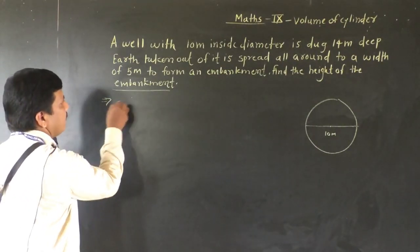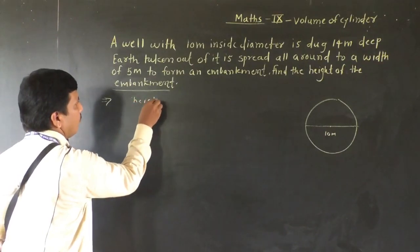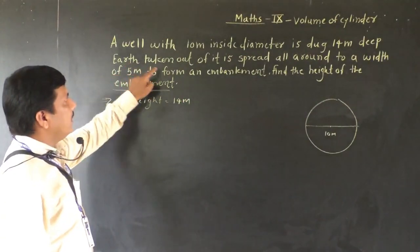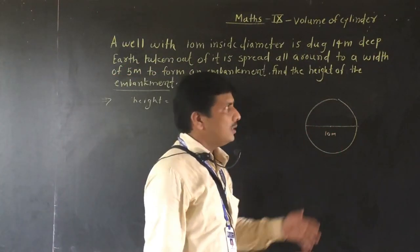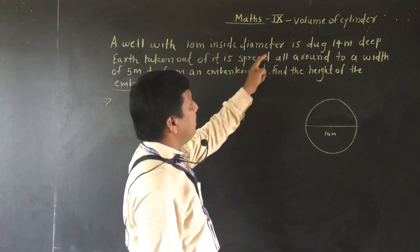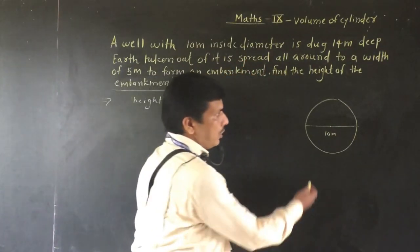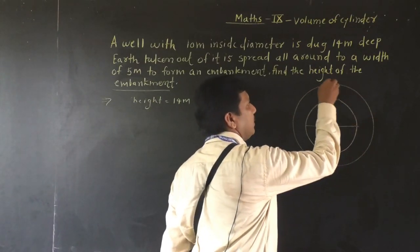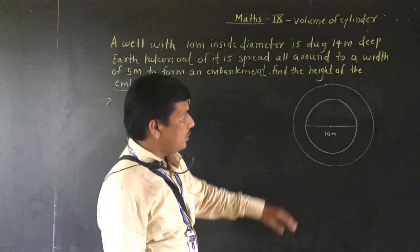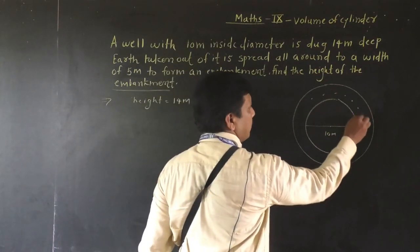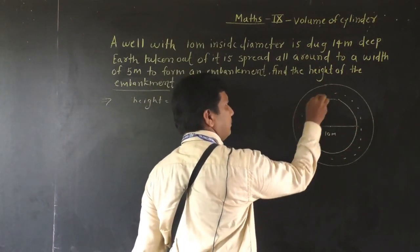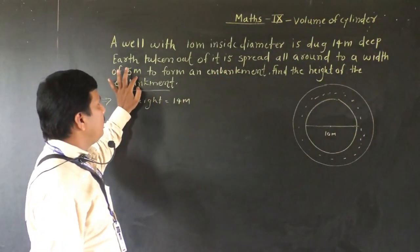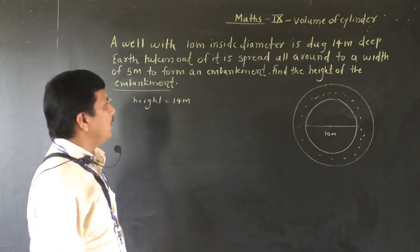The earth taken out is spread all around to a width of 5 meters to form an embankment, and we have to find the height of this embankment. The inner radius of the well is 5 meters. Since the earth is spread 5 meters wide all around, the outer radius of the embankment is 5 plus 5 equals 10 meters.